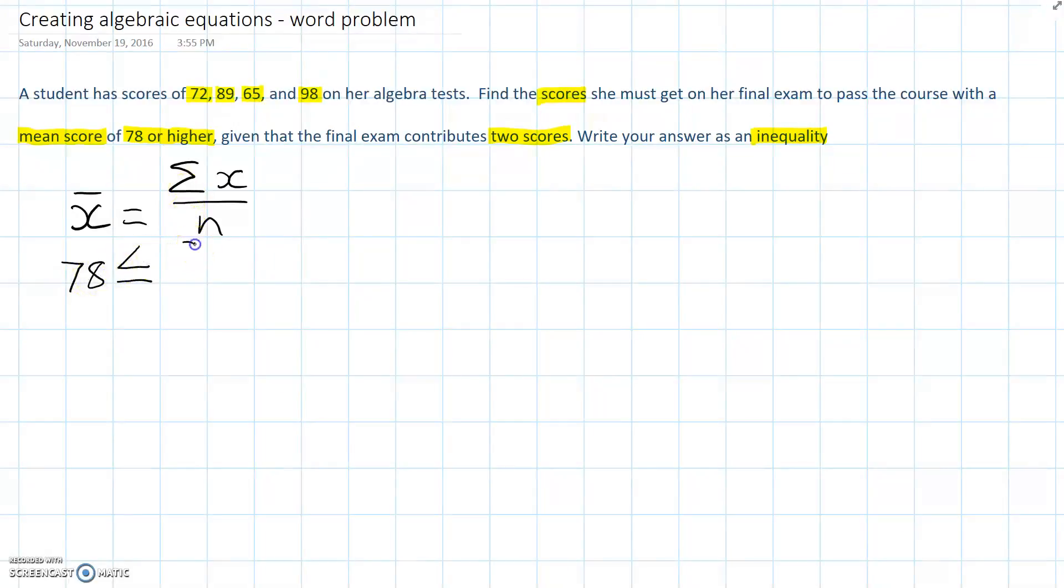So, we have the sum of all values over n. Now, 78 is less than or equal to, well I have sum of the values. 72, 89, 65 and 98 adds up to 324.